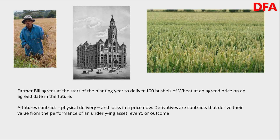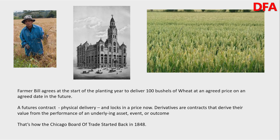And derivatives, really, are contracts that derive their value from the performance of an underlying asset, event, or outcome. In this case, it's to do with the delivery of wheat. And way back in 1848, that's how the Chicago Board of Trade started — it became a trading ground to allow those growing wheat and other commodities, and those selling and trading them, to come together to provide certainty for sellers and an opportunity for buyers.